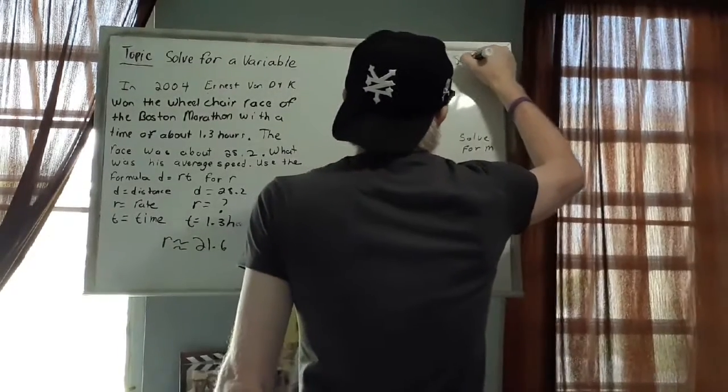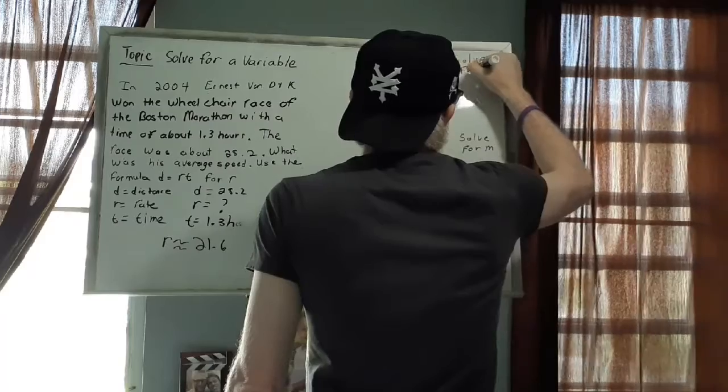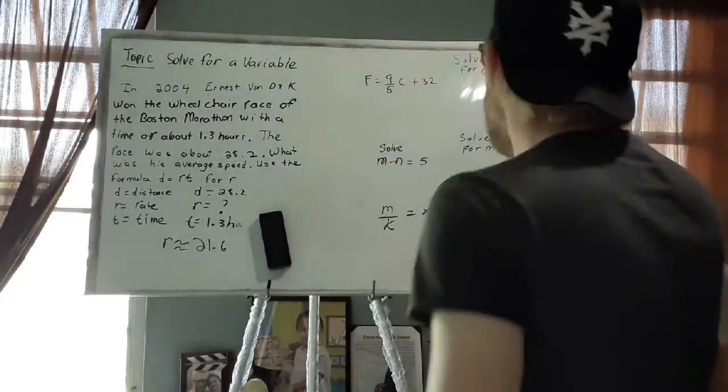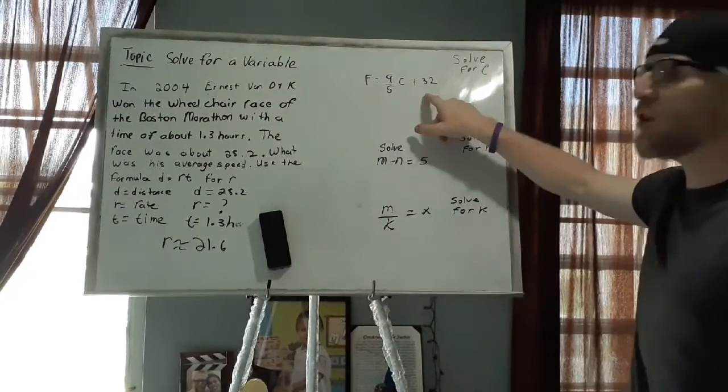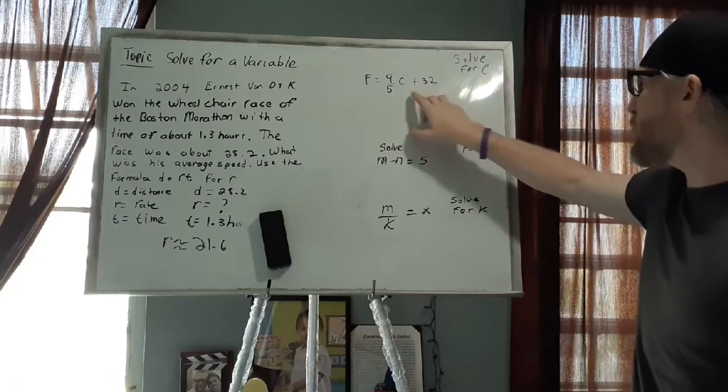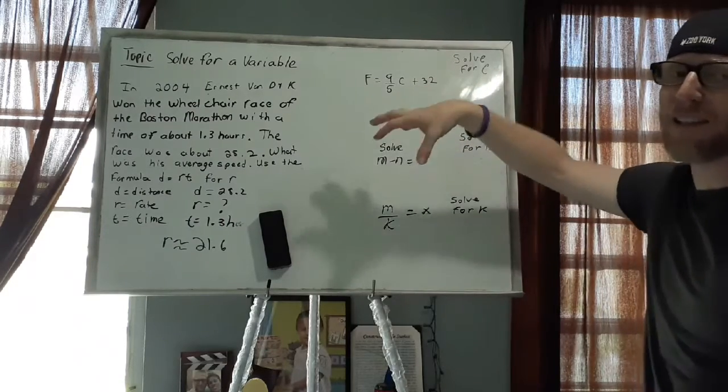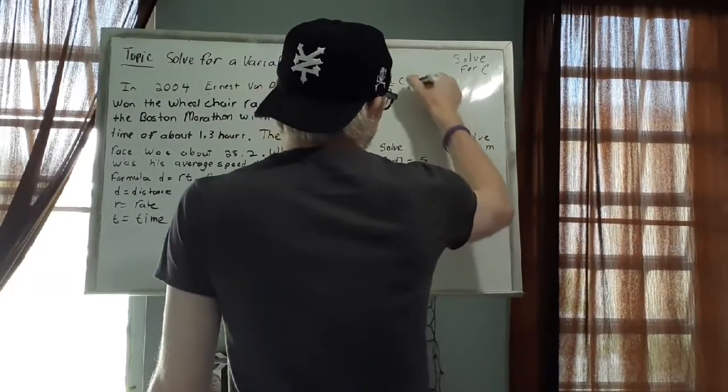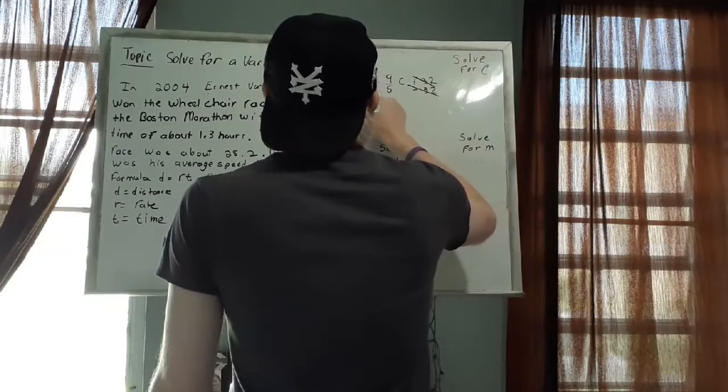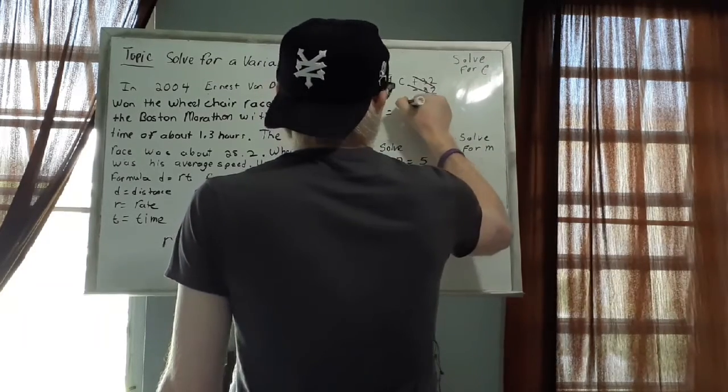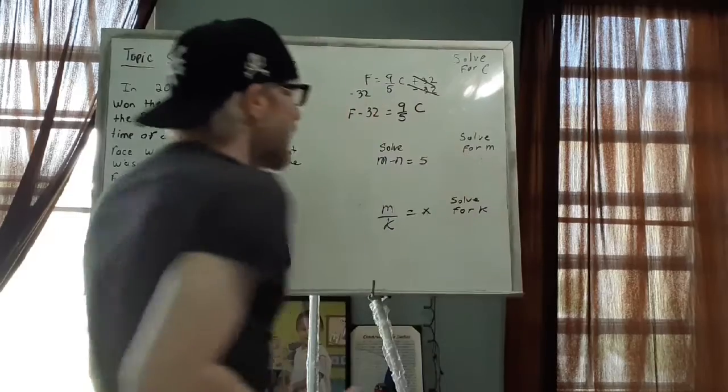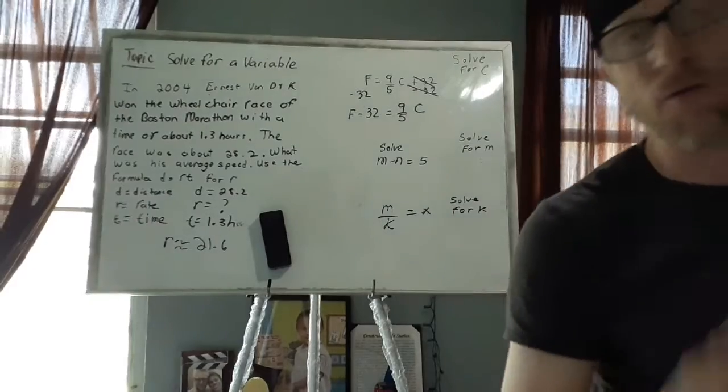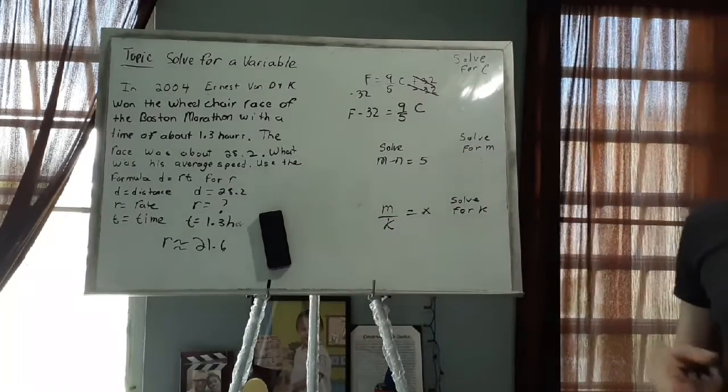Now the formula says F equals 9 over 5C plus 32. Now, sometimes they're just going to ask you to solve for a variable not necessarily find the value. Here, they want us to solve for C. So if we're going to solve for C, what do I need to do? Well, I need to get rid of the 32. That's the first thing I need to do. I need to get rid of the 32 so I can have 9 over 5C isolated. So what you're going to do is you're going to subtract 32, and this is going to cancel out, and you have F minus 32 equals 9 over 5C.